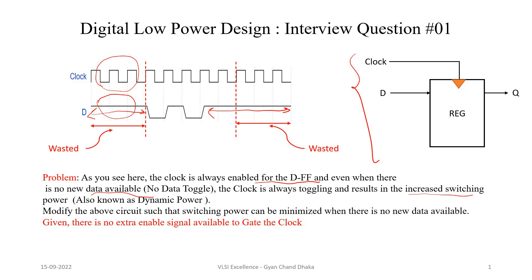The important point here is that we are not given any extra enable signal. We are only given the clock signal and the input data signal, and we do not have any enable signal that we can use to gate the clock.